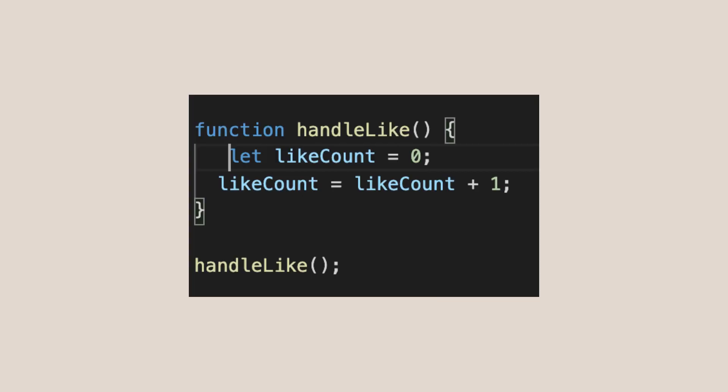The problem here is that the like count variable is in the global scope, meaning any function can modify it. In a very complex application it is quite common to misuse this global variable. We could use a local variable to make it private inside the function, but the issue is every time handle like is called, the count resets to 0 and the output is always 1, no matter how many times the button is clicked. So we want the variable to be private and also the increment must work correctly.